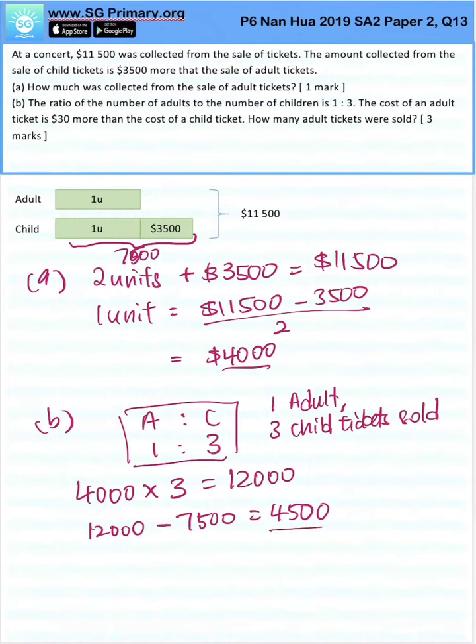Now, this is the difference between the adult sales and the child ticket sales. They tell us that the cost of an adult is $30 more. So we want to find out how many of these differences of $30 can be found in this $4,500. So I take $4,500 divided by 30. There are 150 of these sets of differences.